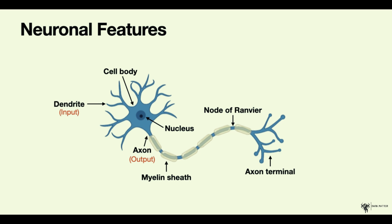We have a few of these nodes of Ranvier across the axon, as you can see. You will understand the function of this structure in the next lecture, which is on neurotransmission and communication in the brain. The electric impulses will actually be passing from one node to the next, rather than just passing through the axon — this is why the myelin can speed up neurotransmission.